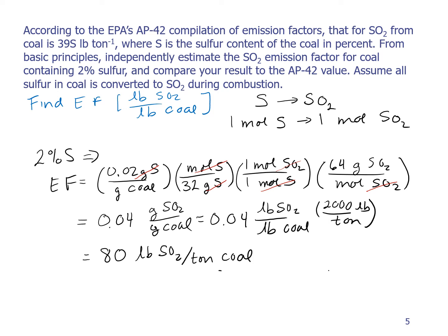For comparison from AP-42, I have that my emission factor is equal to 39 times S. So it's 39 times 2, which gives me 78. And remember the units on that are pounds of SO2 per ton of coal. So these two numbers here, we've got the 80 and 78. Those are pretty close. So that's where that 39S comes from.